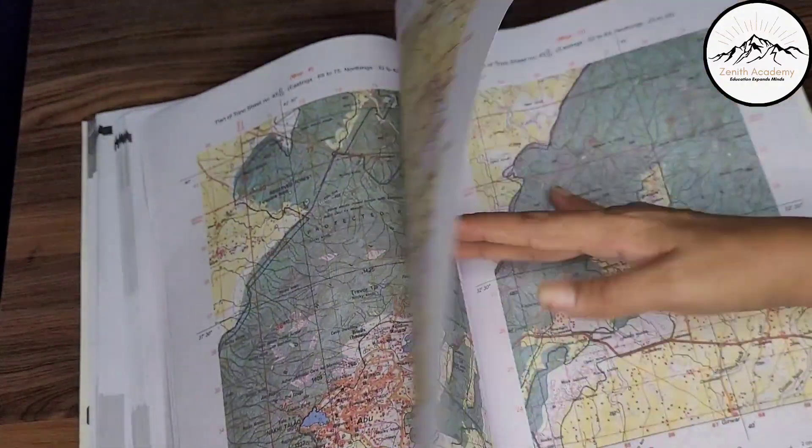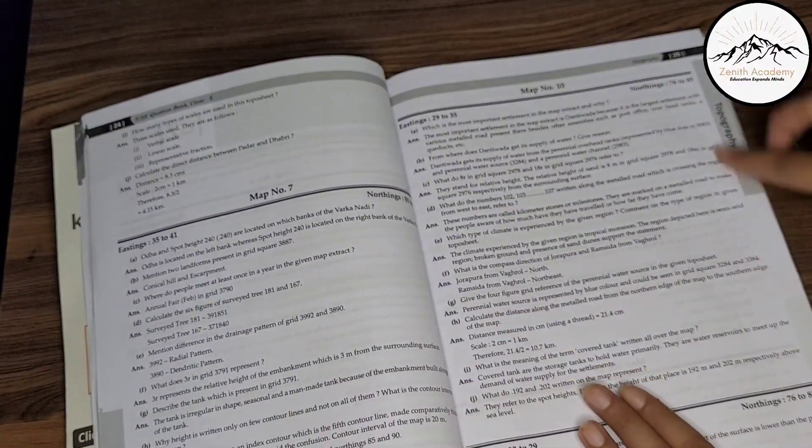So all the maps that you require for answering those questions, all the topographic maps are there in detail. Convention signs and symbols are given also. So you need not buy any other book for topography. In this book itself, the whole of topography and maps are covered. So here, all the questions for topography till map number 12.